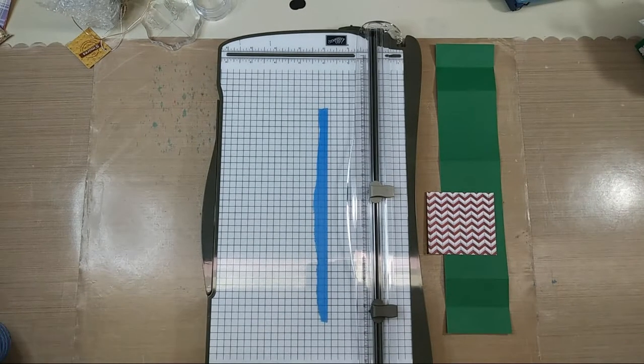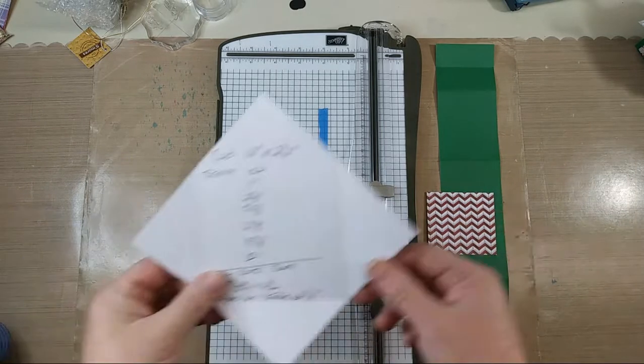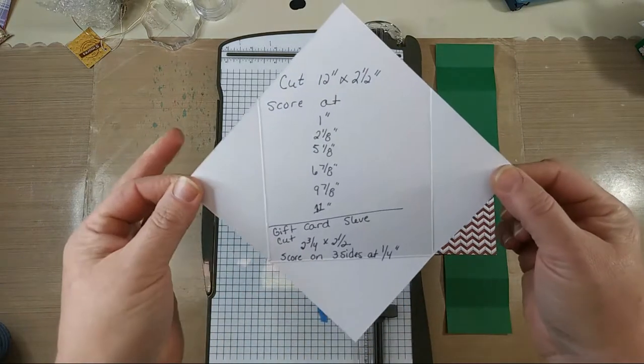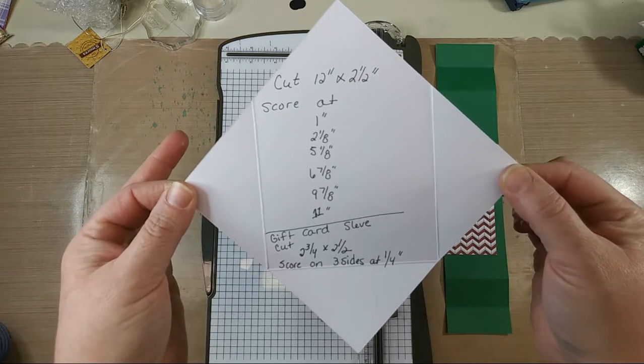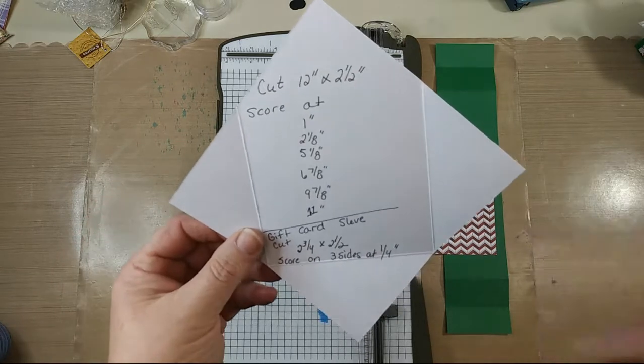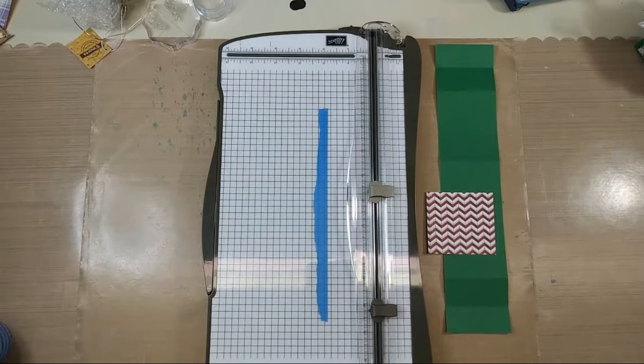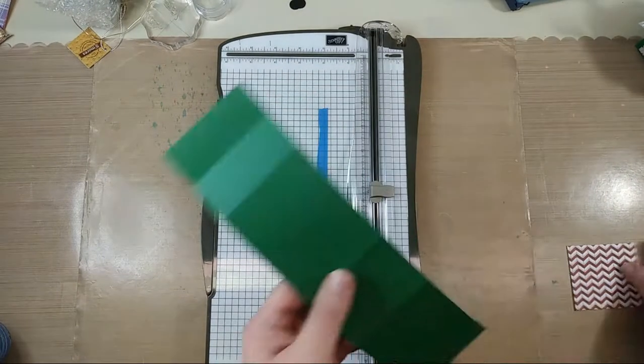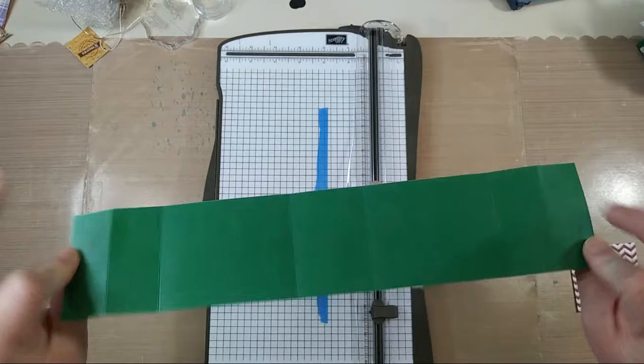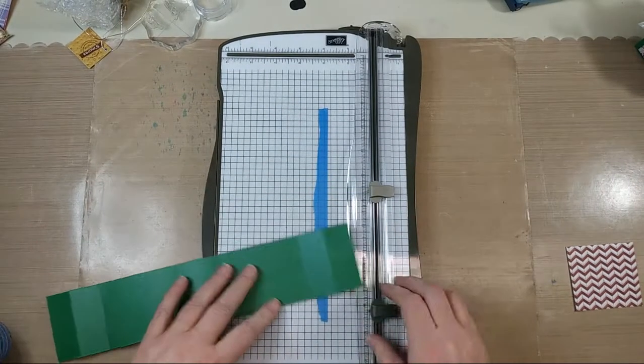You need some 12x12 cardstock, and I have all the dimensions written out for you. I'm going to show you right here, and I will also type these in the description underneath this video. So, it's pretty easy. There's a bunch of scoring, so that will help you get all the folds right.